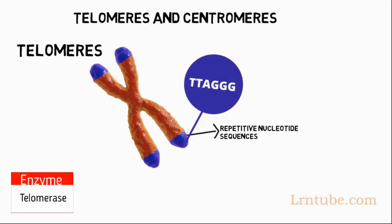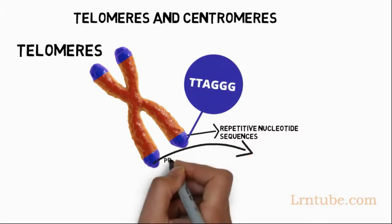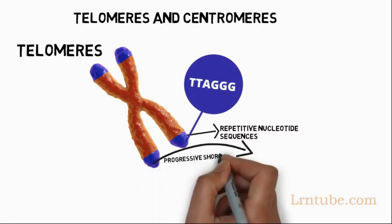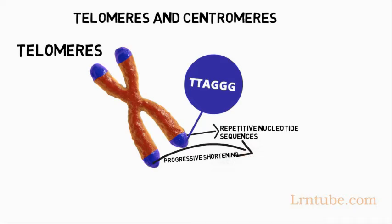Telomeres are like caps at the end of each strand of DNA that protect chromosomes. Without telomeres, DNA strands become damaged and the cell cannot perform its function. Animal studies indicate that there are a set number of replications possible, and that the progressive shortening of telomeres contributes to aging.